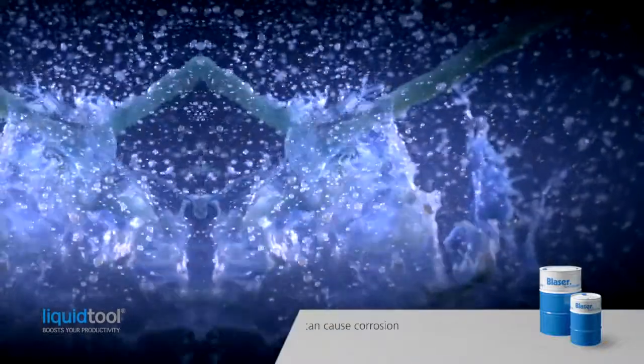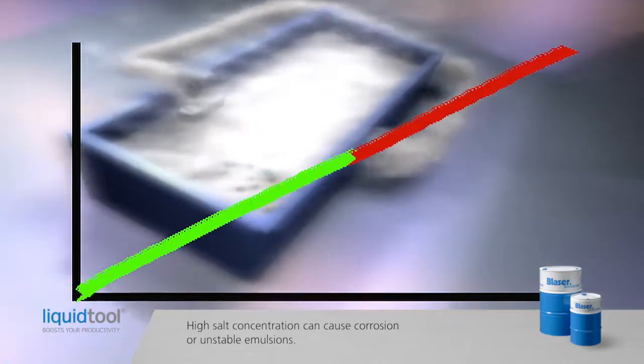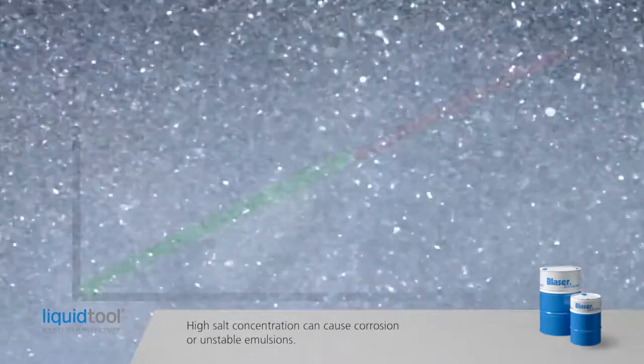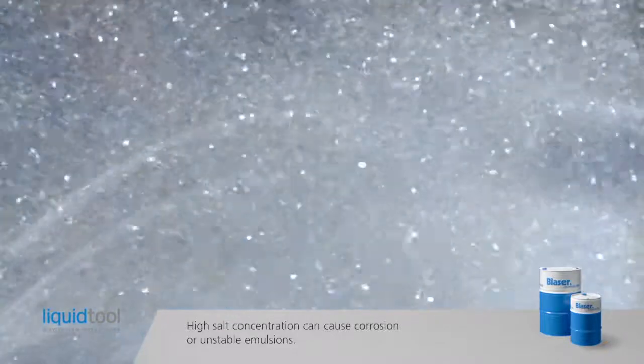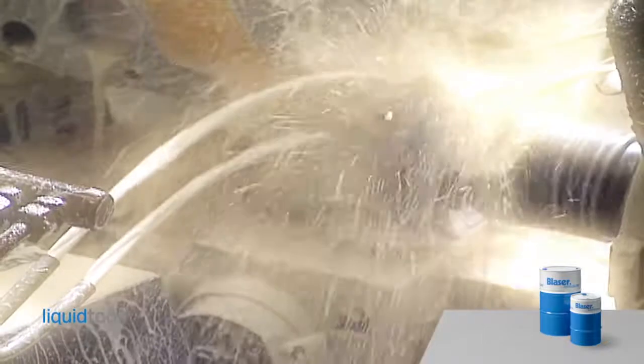High salt concentrations such as chlorides and sulphates can cause corrosion or an unstable emulsion. Here again the problem is solved by adding deionized water. It reduces the salt concentration and extends the emulsion sump life.